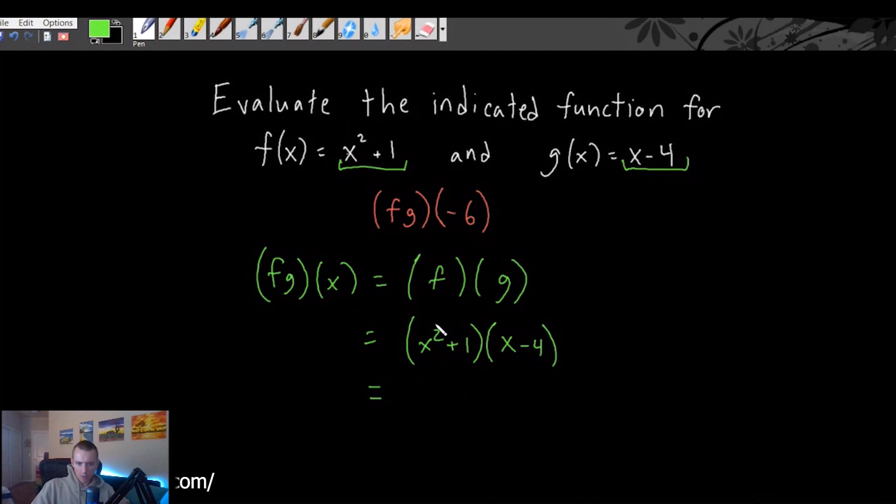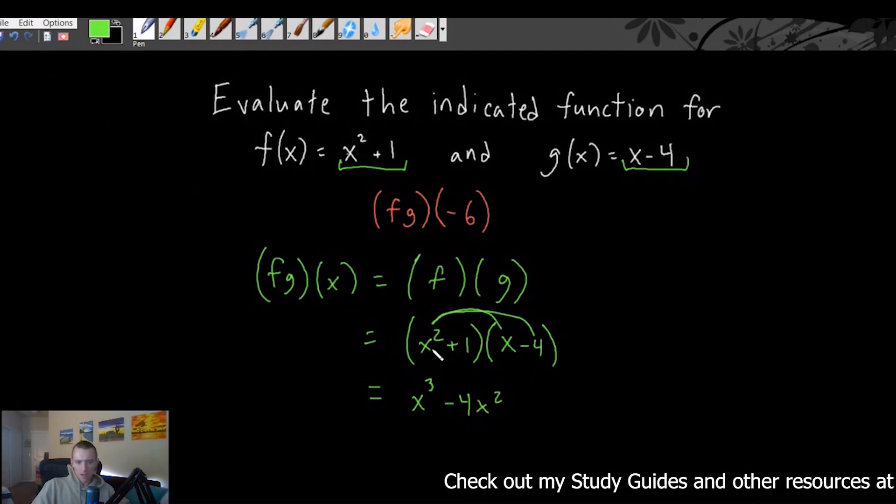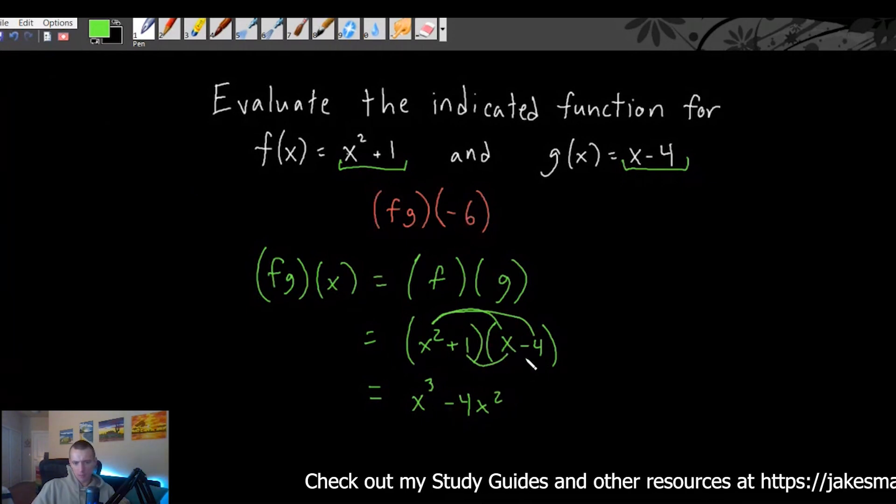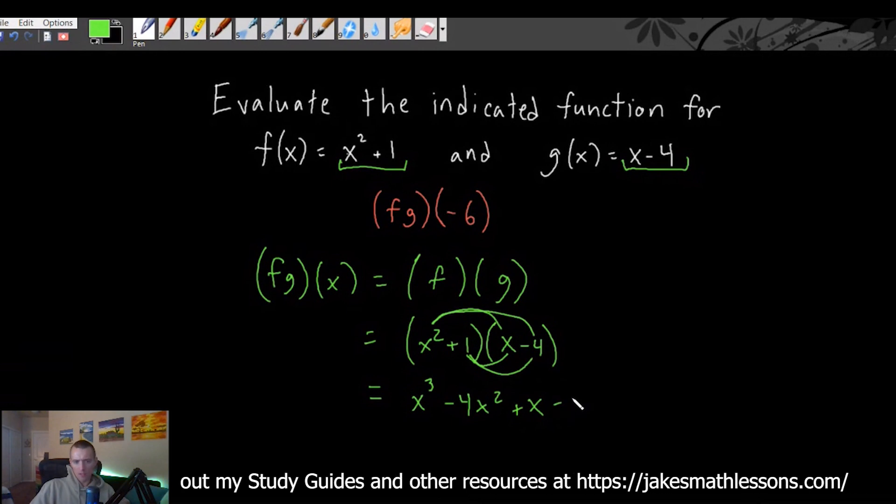So from here, what we can do is foil this out. So we're going to get x squared times x is x cubed. Then x squared times negative 4 is going to be negative 4x squared. And then plus 1 times x is plus x. And then plus 1 times negative 4 is minus 4.